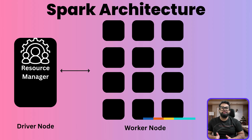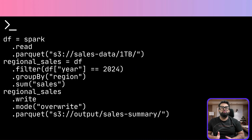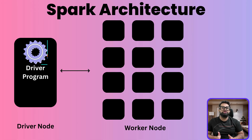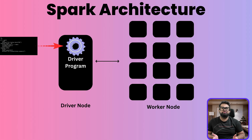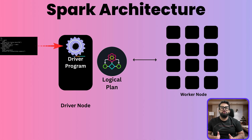The master node tells the workers what to do, and workers report back with their results. This division of labor is what allows Spark to process data in parallel across many machines at once. The moment you run this code, Spark launches a driver program on the master node of your cluster. The driver reads your PySpark script, initializes a Spark session, and then begins building a logical plan — a blueprint of what needs to happen.